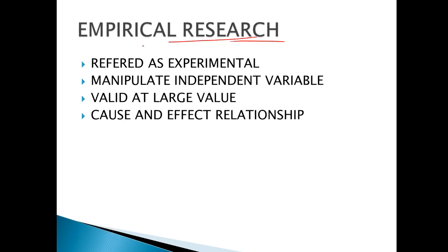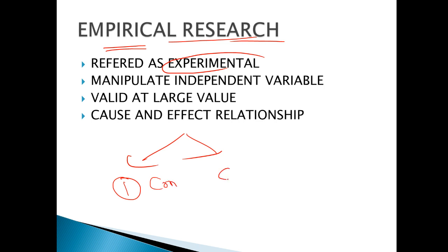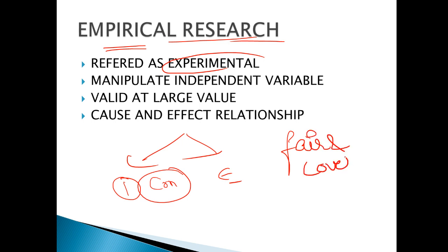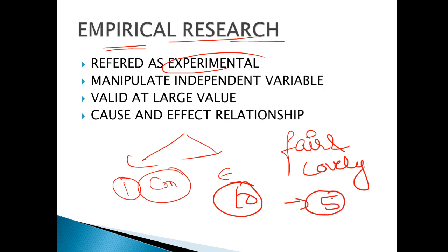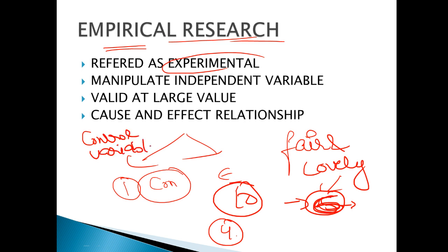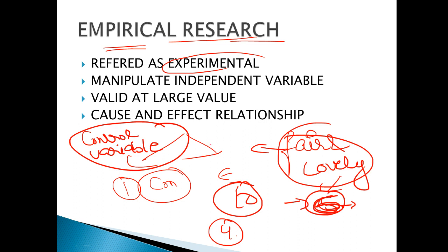Next is empirical research, which we also call experimental research. Under experimental research there are two factors: one is the control variable and one is the experimental variable. For example — take ten girls, apply Fair and Lovely on six of them and not on four. The four on whom it was not applied are called the control variable, and the six on whom it was applied — the experiment was done — are called the experimental variable.